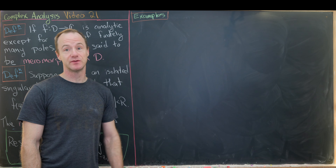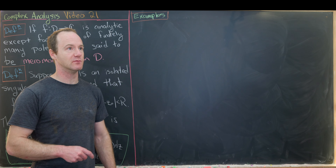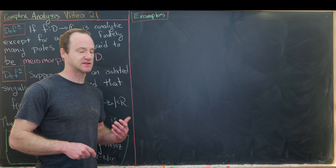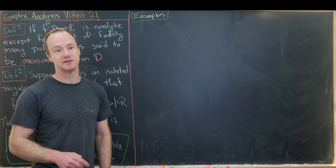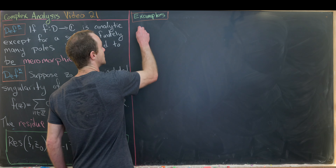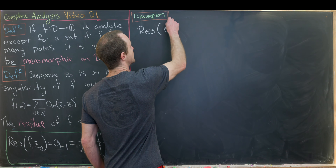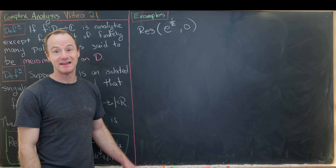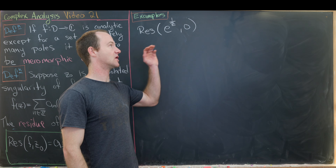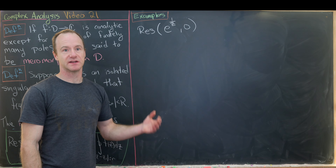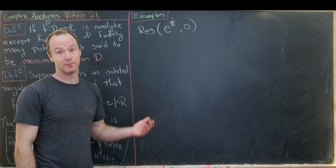Let's now jump into examples. This video is mostly examples of residues of functions, as well as some tricks for calculating residues easily. Let's first look at the residue of e^(1/z) at zero. Notice that in a previous video, we showed that e^(1/z) has an essential singularity at zero — an essential singularity is not a pole.